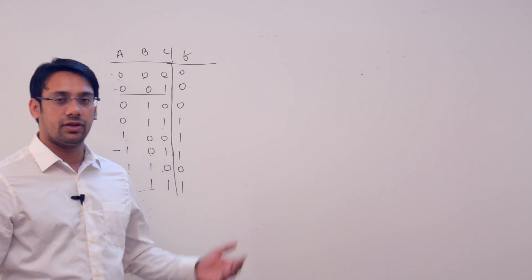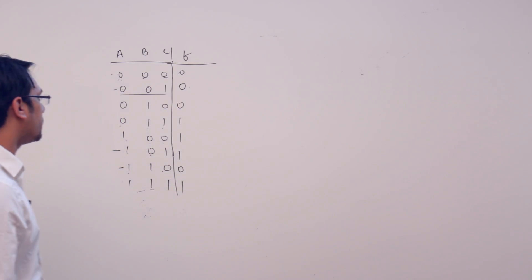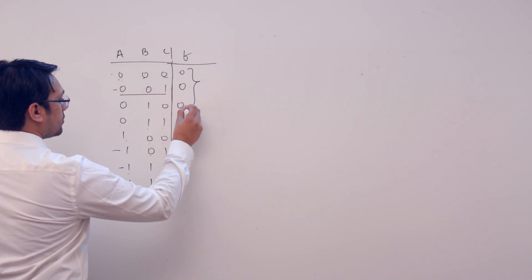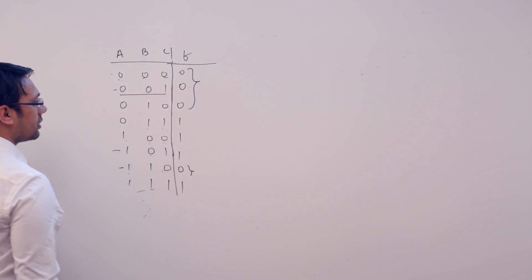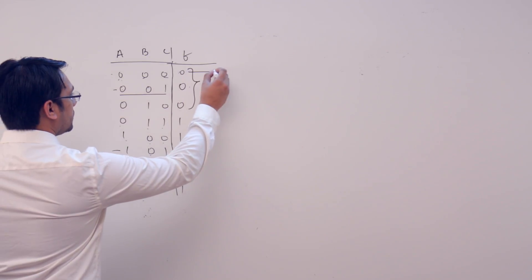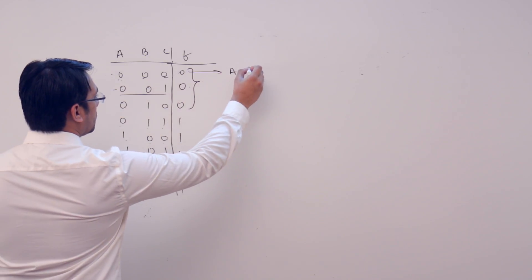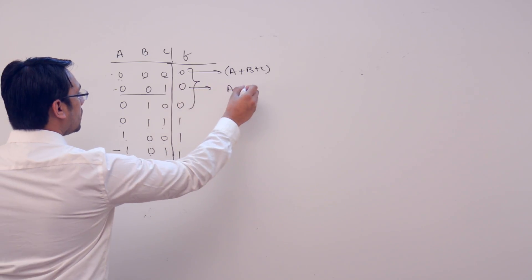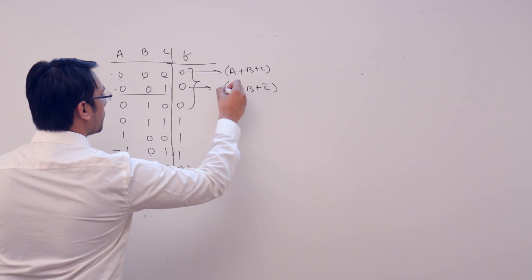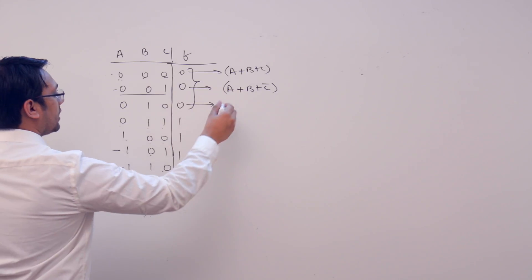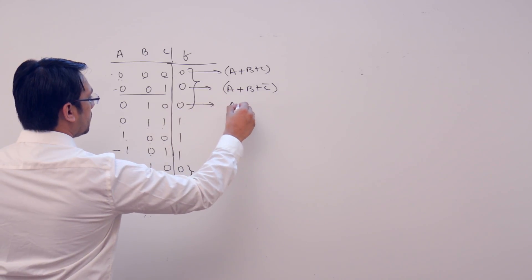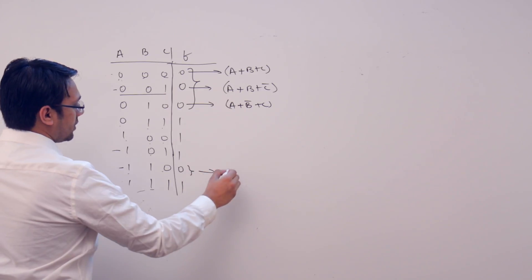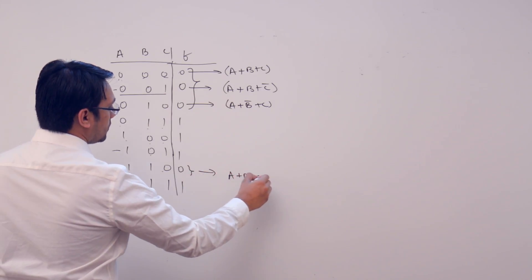Assume we are having this function. This function is assuming a value 0 at this location as well as at these locations. I can represent this value as a+b+c, this value as a+b+c complement, this value as a+b complement+c, and this value as a+b+c complement.